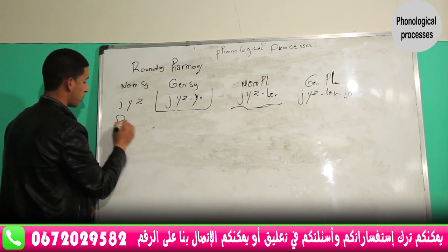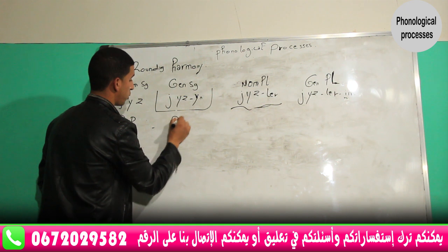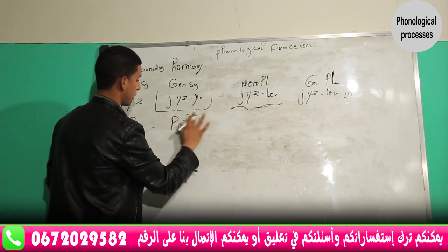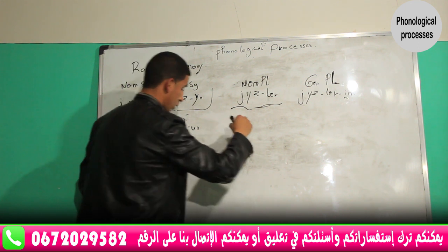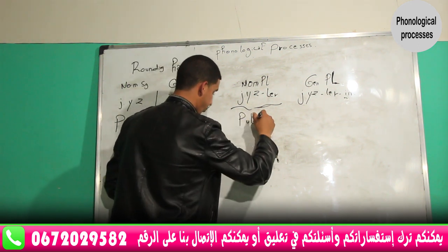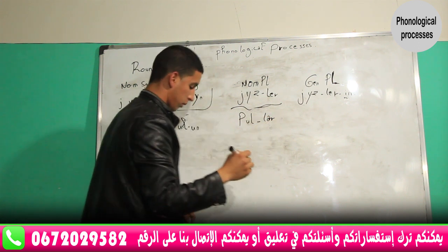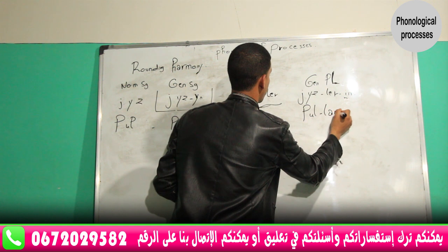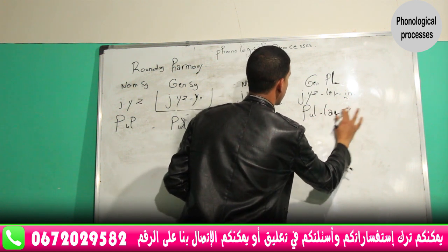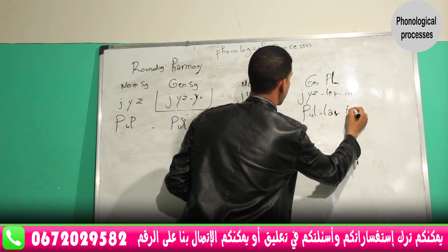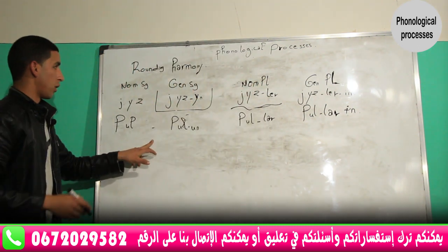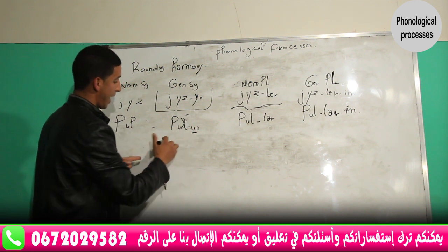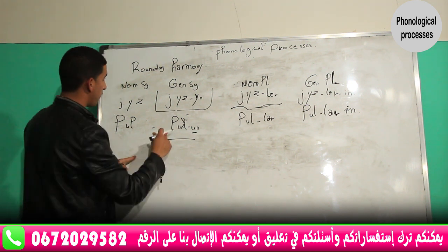Another example is 'pull' — meaning 'people.' We have 'pu,' 'pu,' and 'lorin.' In genitive singular, the suffix vowel agrees in rounding with the stem vowel. In this case, we are talking about rounding harmony.